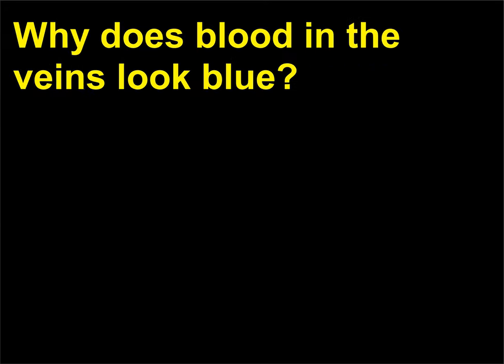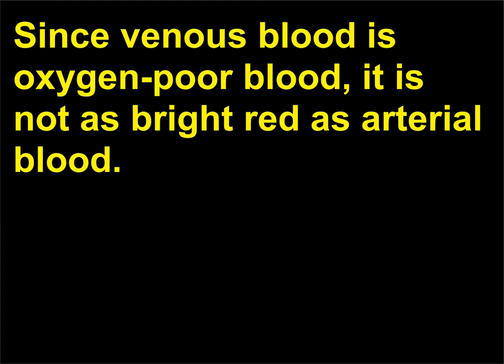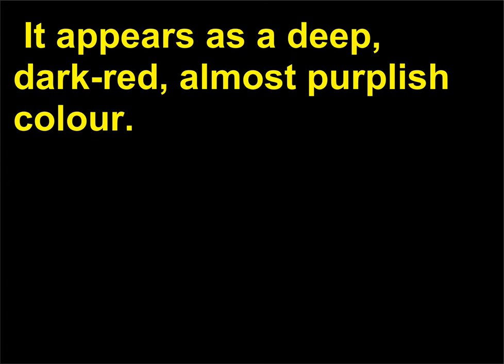Why does blood in the veins look blue? Since venous blood is oxygen-poor blood, it is not as bright red as arterial blood. It appears as a deep, dark red, almost purplish color. Seeing blue blood in veins through the skin is a combination of light passing through the skin and the oxygen-poor blood.